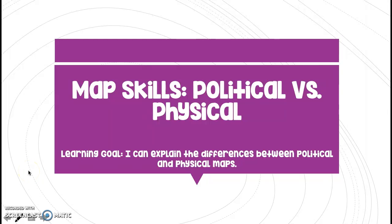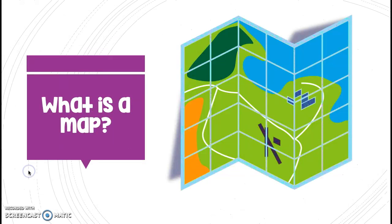Hi friends, today's lesson is all about map skills — political versus physical. Now, what is a map? A map is a drawing of a place from high above. We use maps for lots of different things, and the reason why you need a map helps you decide what type of map to get.